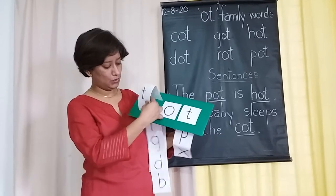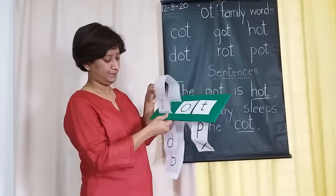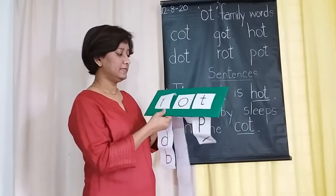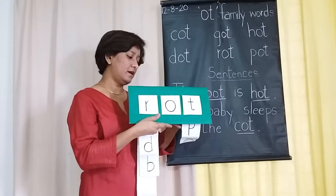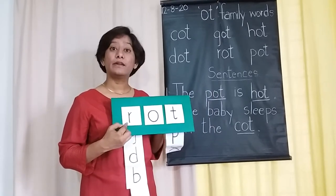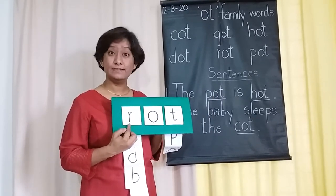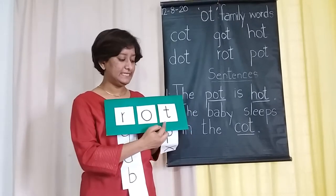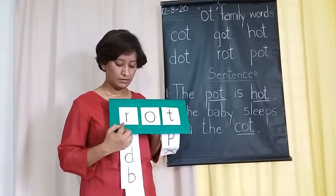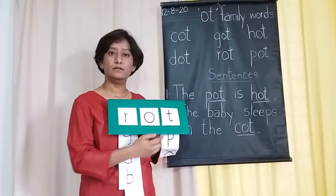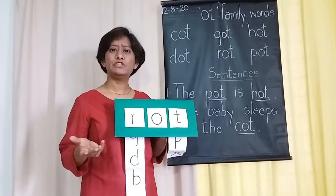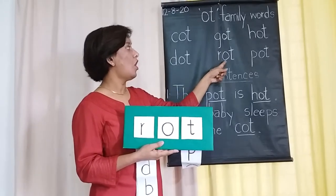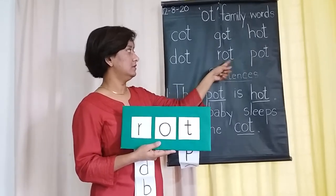This time we are going to add letter R. R says R. O says O. T says T. R, O, T — Rot. Rot means something which gets decayed or spoiled. That's the word — Rot.